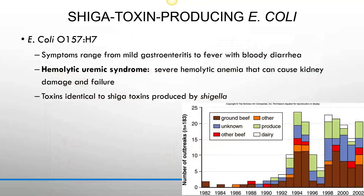The Shigatoxin is responsible for more serious intestinal damage and systemic effects. Shigella has a relatively low infectious dose — only about 10,000 cells for a full-blown infection. The Shigatoxin is also produced by E. coli O157, a Shigatoxin-producing E. coli. Symptoms range from mild gastroenteritis to fever with bloody diarrhea, and some patients develop hemolytic uremic syndrome — severe hemolytic anemia that can cause kidney damage and failure. Any diagnosis of E. coli O157 must be immediately reported to the state.